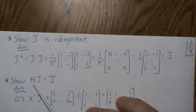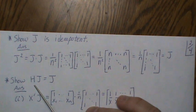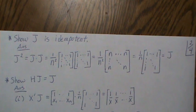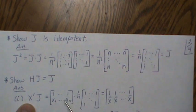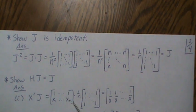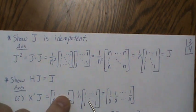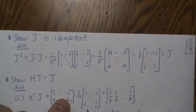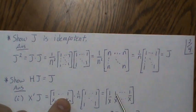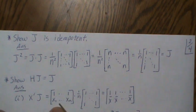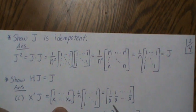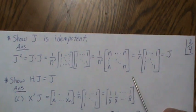H is X(X'X)⁻¹X', so let's work through this piecemeal. X-transpose has all ones in the first row and x₁ through xₙ in the second row. When you multiply X' by J, the first row of ones times each column gives n divided by n = 1. For the second row, the x's times one give the sum of the x's divided by n, which is x-bar. So x-bar appears in every element of the second row.